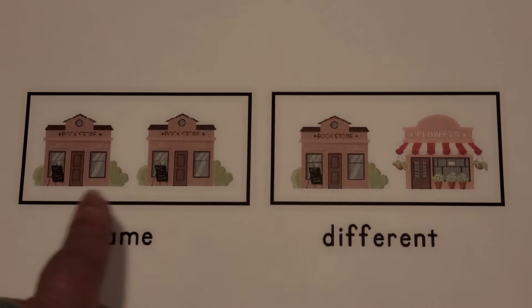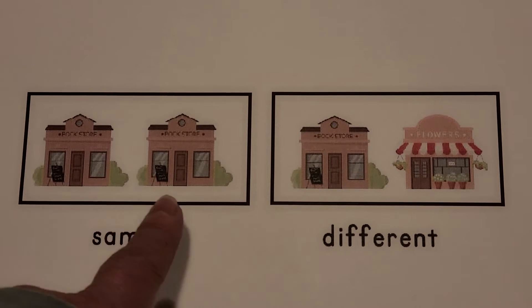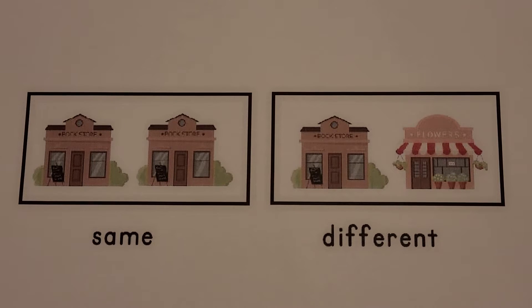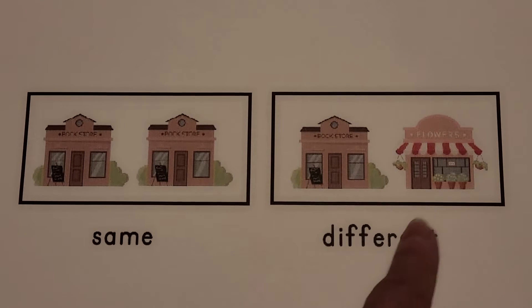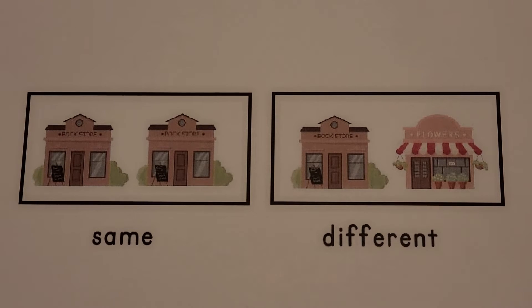These two buildings are the same — they look alike. These two buildings are different. This one has a red and white stripe awning.